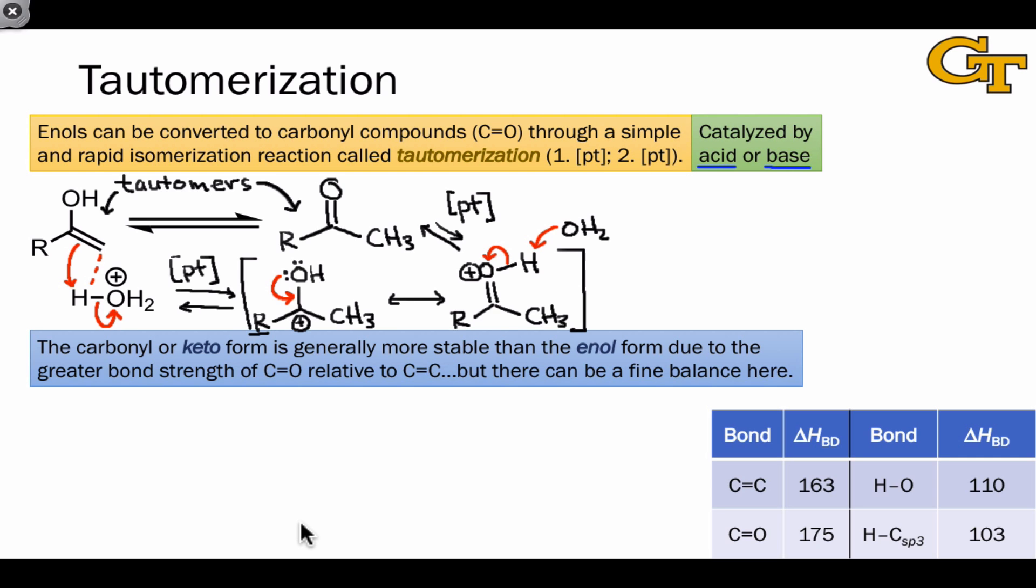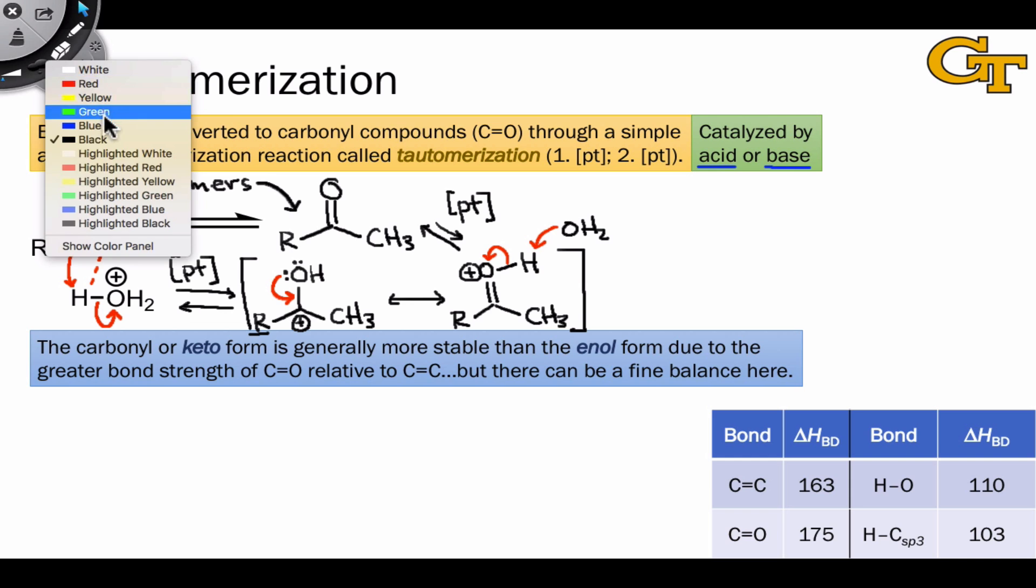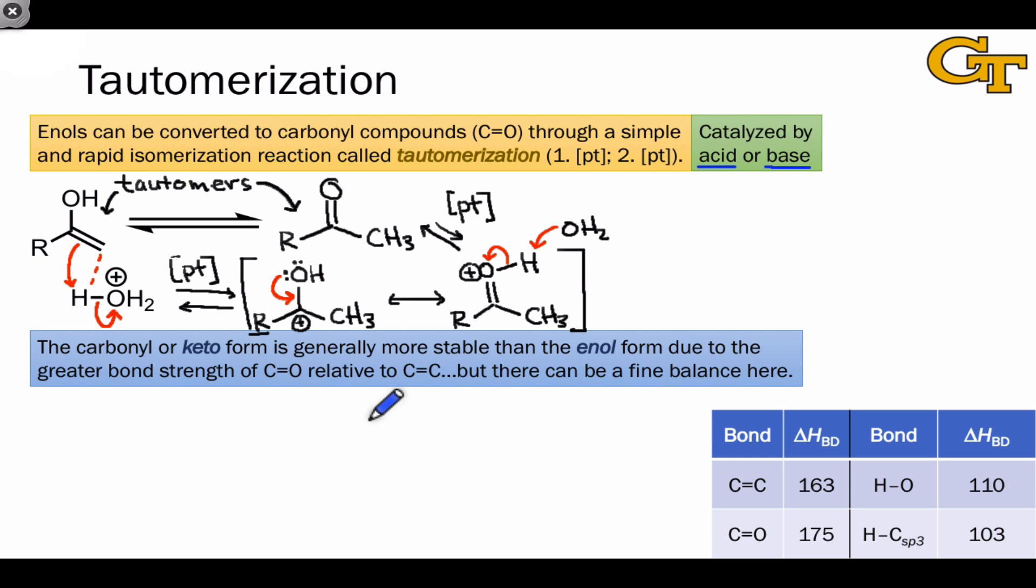Because the reaction reaches equilibrium very quickly, because it just involves proton transfer, the reaction is thermodynamically controlled, and so we can ask about the relative stability of the keto and enol forms. What we observe in practice is that the keto form is generally favored, and this means that it's more stable thermodynamically than the enol form.